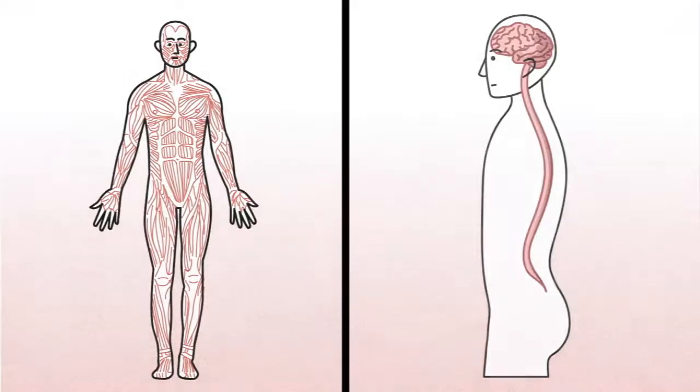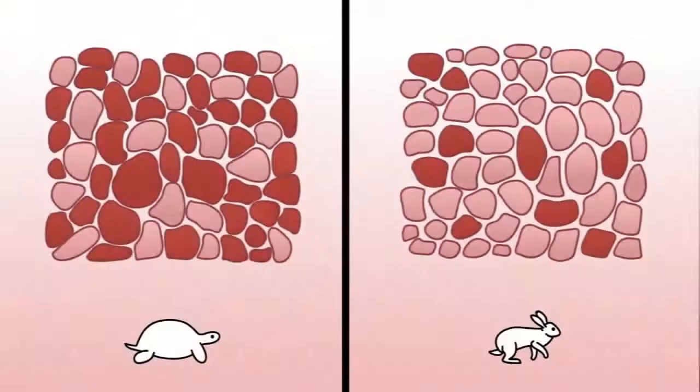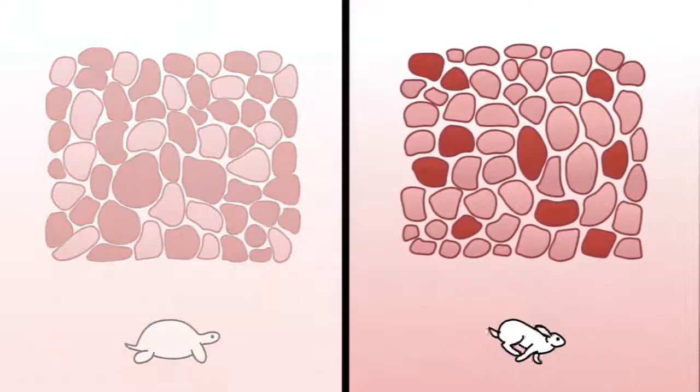This muscle group also contains two types of muscle fibers to refine our motions even further: slow twitch and fast twitch. Fast twitch fibers react instantly when triggered, but quickly use up their energy and tire out.